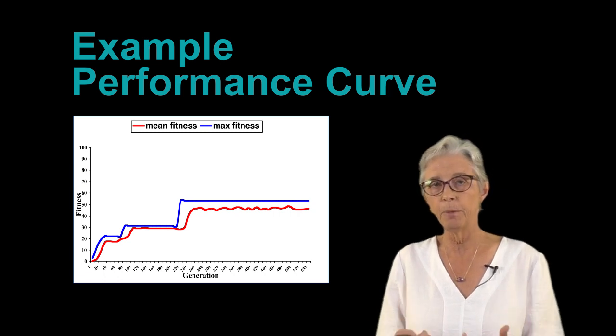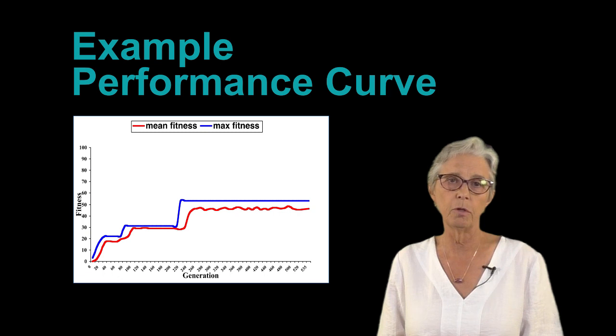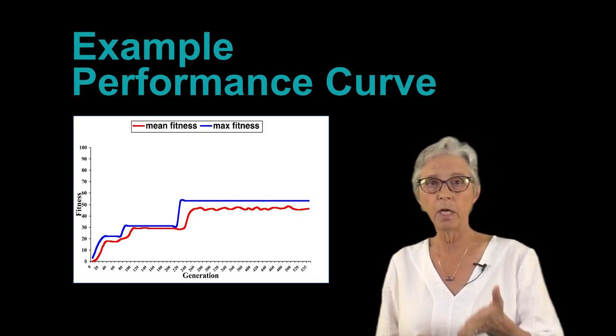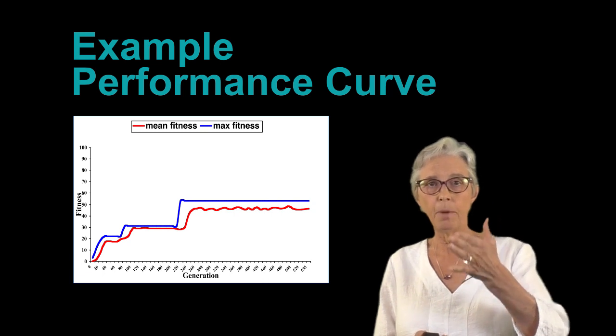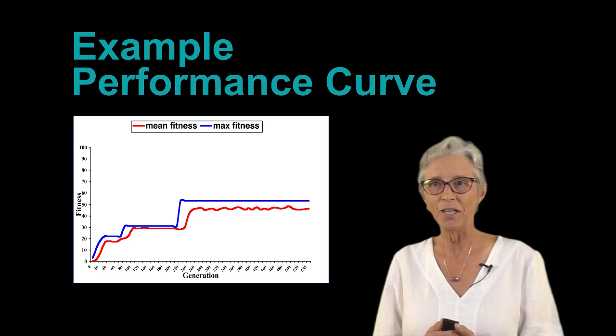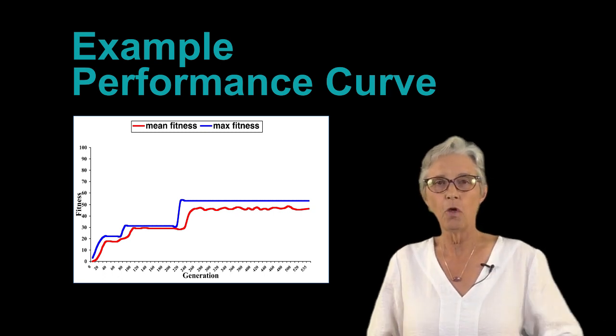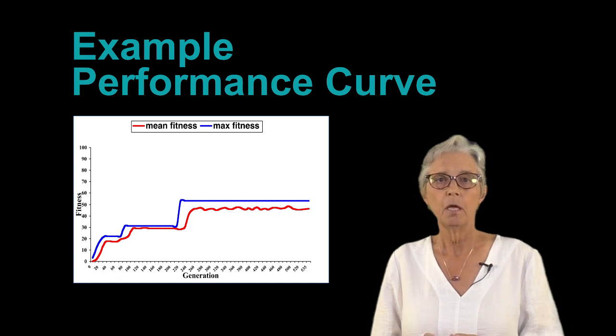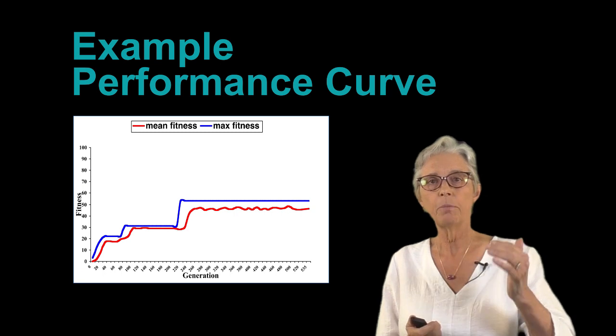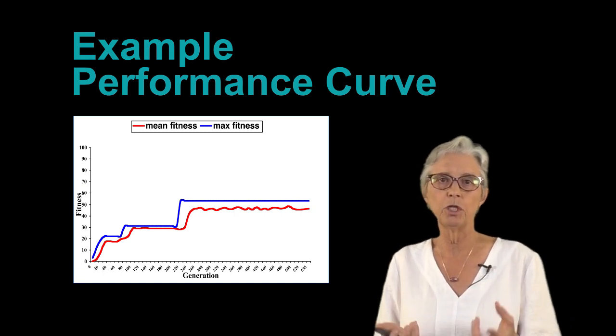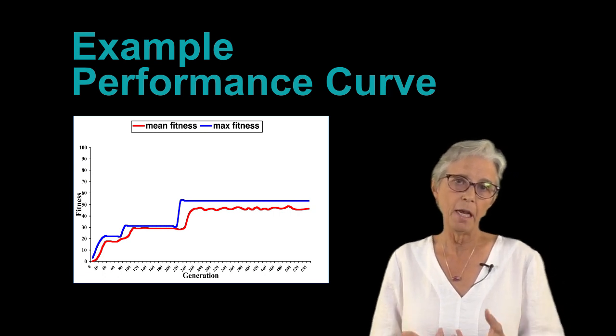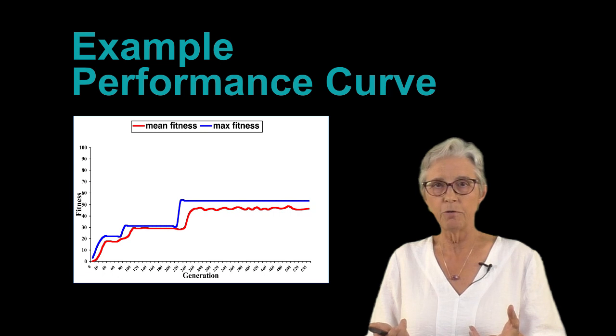This is a very typical kind of performance curve that we see with genetic algorithms where the fitness of the population starts out very low initially, very quickly climbs up and improves as the really lousy individuals get deleted and the somewhat better individuals get copied. So then the whole average fitness moves up, then there's a little bit of searching around that we see and we get another innovation, but eventually the population gets stuck on what's known as a plateau.